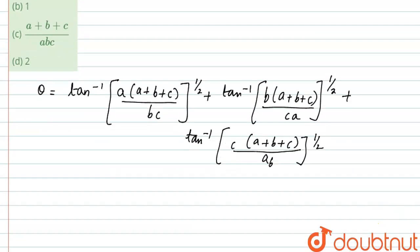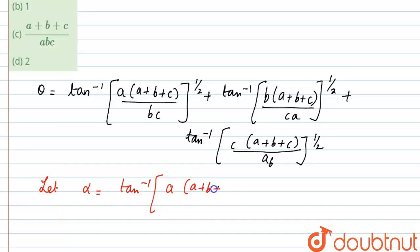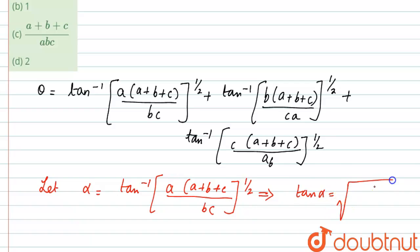Here we will let alpha equal to tan inverse of A·(A+B+C)/BC raised to the power half. This implies tan alpha equals square root of A·(A+B+C)/BC.